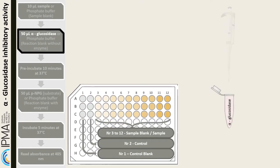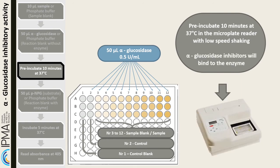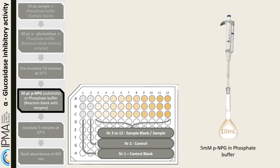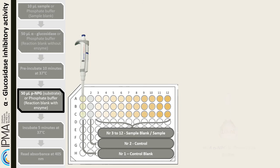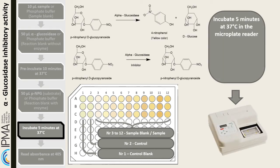Pre-incubate for 10 minutes at 37 degrees Celsius in the microplate reader with low-speed shaking. After pre-incubation, add 50 microliters of substrate to well 1 and all even-numbered wells. Incubate for 5 minutes at 37 degrees Celsius in the microplate reader. The remaining alpha-glucosidase that was not inhibited will react with the substrate and release paranitrophenol. Read the samples at 400 nanometers in the microplate reader. The inhibition percentage is given by the equation shown in the slide.